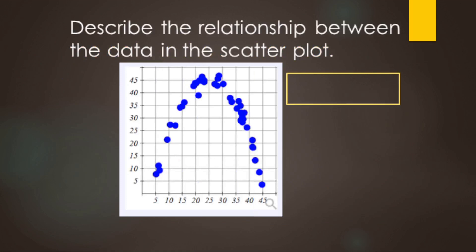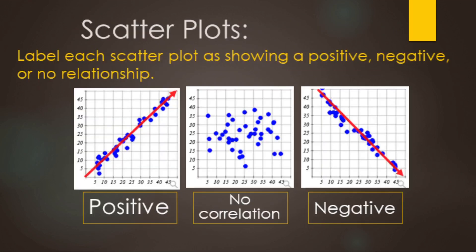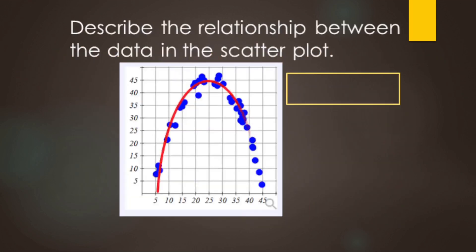This scatter plot here has a pattern — it goes up and then back down — so it's not no correlation because it has a pattern, but it's not a linear pattern. It's not going strictly up or strictly down. So we call this one non-linear. The other examples were linear or no correlation, but this one is not a linear correlation, so we're not going to try and model it with a line.